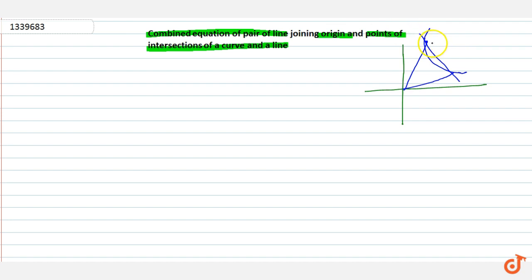Let us assume this is point A, this is point B, and this is our origin. This is the curve and this is the line. We have to find the combined equation of OA and OB.